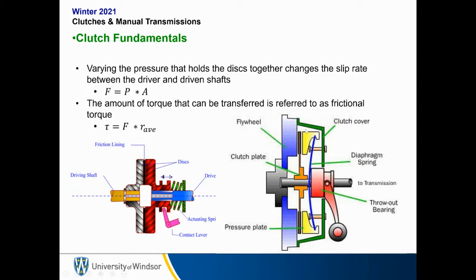Generally in steady state the clutch will be engaged — you have to provide user input to disengage it. Almost all manual transmissions have the clutch engaged unless you put some input, which is generally putting your foot on the clutch pedal. There's a throwout bearing which allows the pressure plate to be pulled back so the clutch plate disengages from the flywheel.